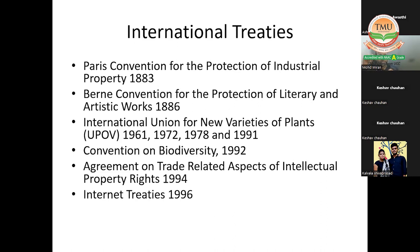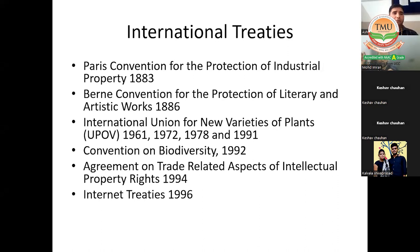The UPOV Convention basically talks about the protection of new plant varieties. It says to countries that are parties to that convention that they should have a new law for the protection of new plant varieties, or if they don't, they should give protection to those plant varieties under existing laws. We also have the Convention on Biodiversity 1992, the Agreement on Trade-Related Aspects of Intellectual Property Rights (TRIPS) 1995, and the Internet Treaties 1996.